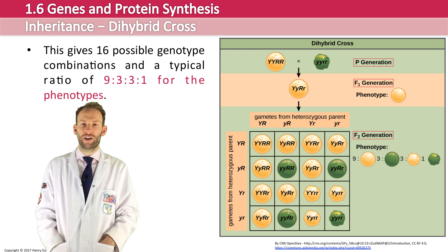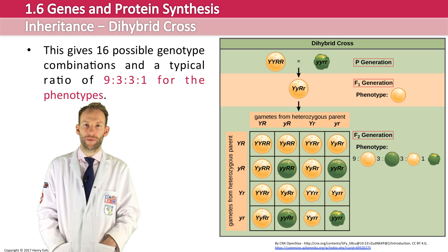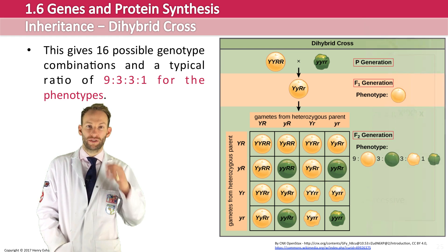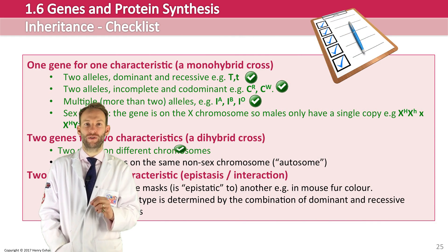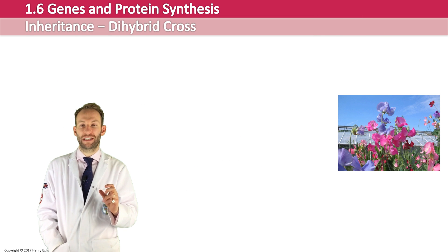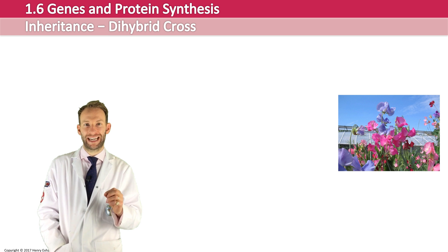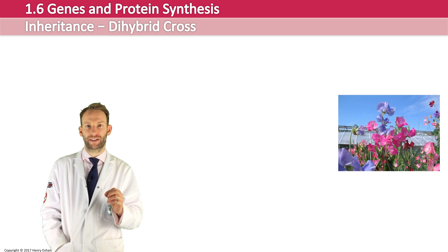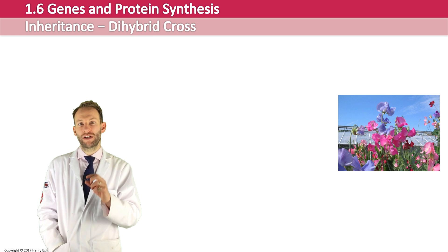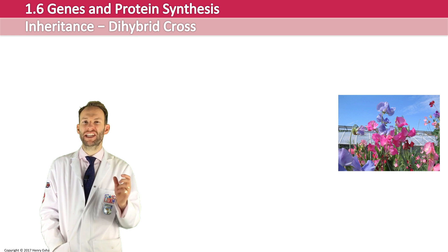Let's move on and look at something called autosomal linkage. It's still a dihybrid cross — we're still looking at two genes coding for two characteristics. But we now know that Mendel's law of independent assortment doesn't apply to all allele combinations. If genes are actually located on the same chromosome, then they may be inherited as a pair.